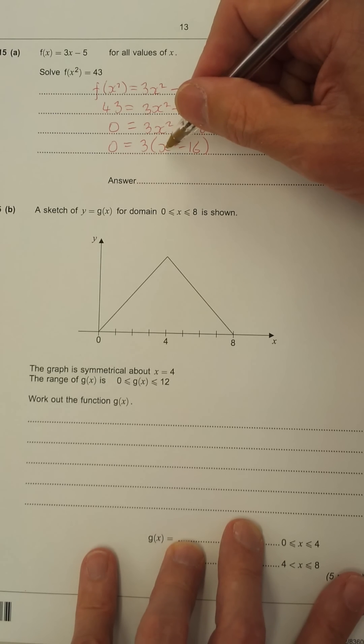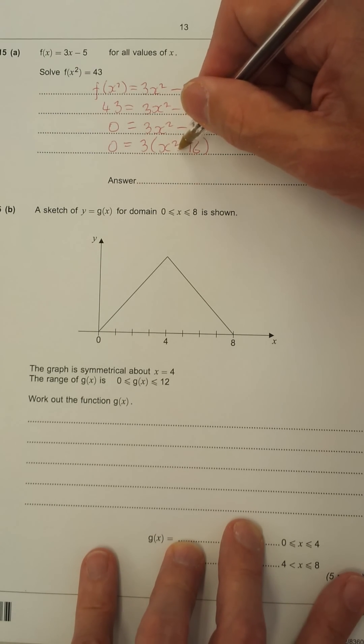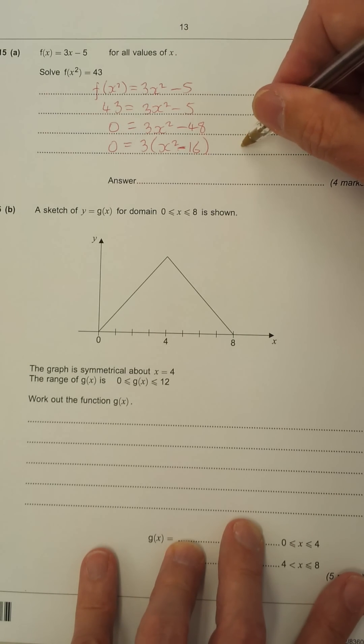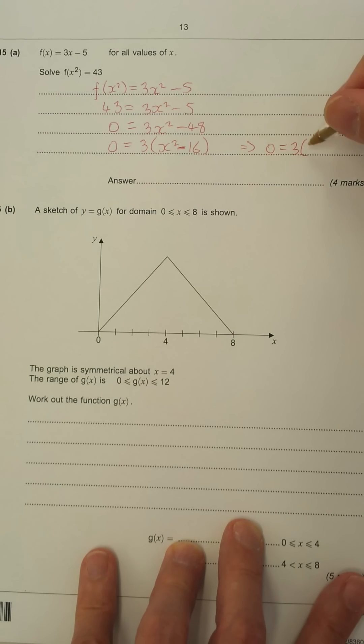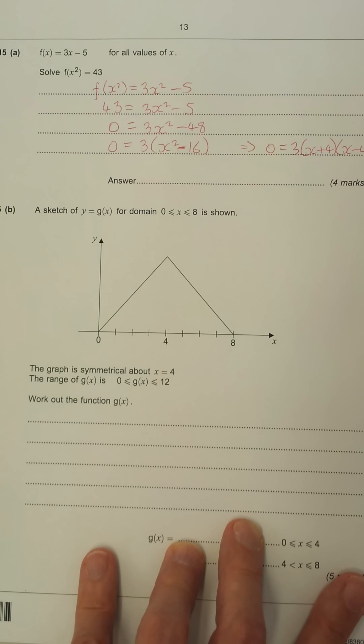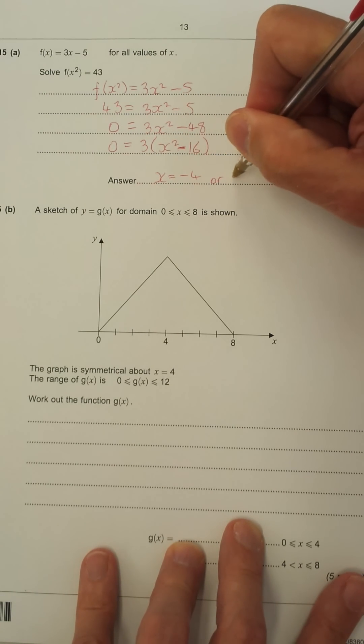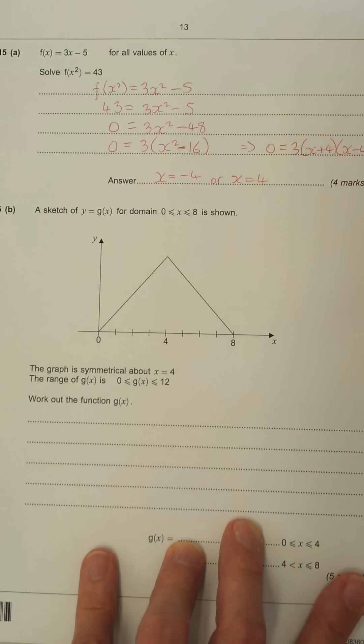Now you need to recognize that x squared is a square number. 16 is a square number. We have a difference, so it's a difference of 2 squares. So that is 0 equals 3, but it's x plus 4, x minus 4. Multiply that out, you'll see we'll get back to x squared minus 16. So now we solve it. x is minus 4 here, and x is plus 4 there. x equals minus 4, or x equals 4. And that's that one done.